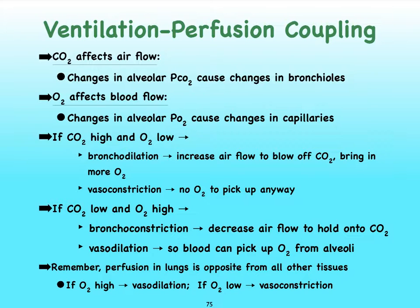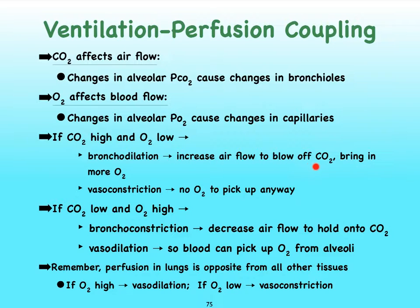Let's look at a scenario. Let's say a clump of alveoli has a high level of carbon dioxide but a low level of oxygen. Because oxygen levels are low, we don't want to send blood there, so we vasoconstrict. On the other hand, since carbon dioxide levels are high, we're going to bronchodilate — by increasing airflow, we'll be able to blow off that carbon dioxide and hopefully also bring in some fresh oxygen.